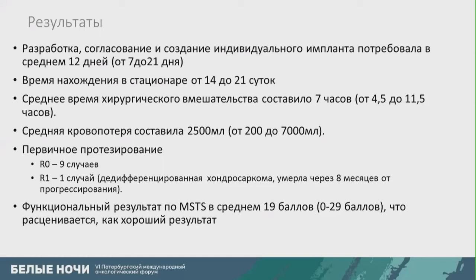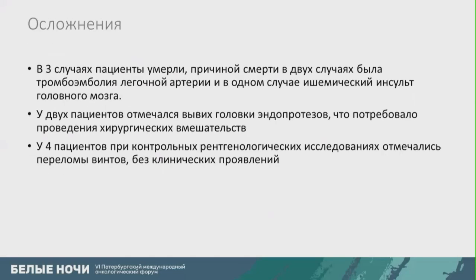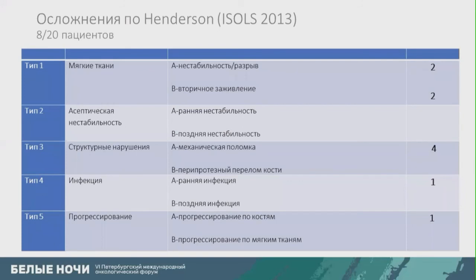When this patient was admitted, her diagnosis was chondrosarcoma G2. Functional result was about 19 points on average. Regarding complications: three patients died — in two cases the cause was pulmonary embolism, and in one case ischemic stroke. In two patients, displacement of the prosthesis head occurred, requiring additional surgery. In four patients, control X-ray showed screw fractures without any clinical signs. The table of complications distributed by Henderson types shows that the majority were type one and type three.